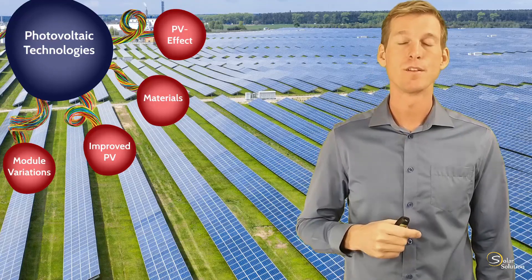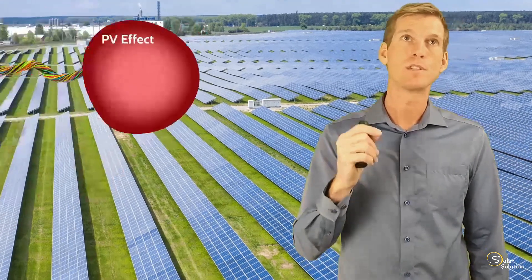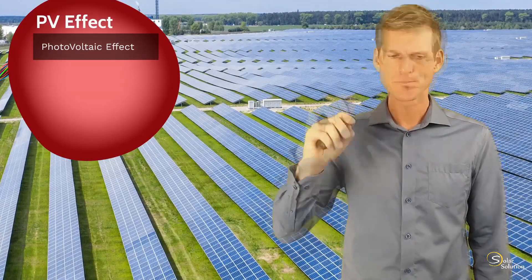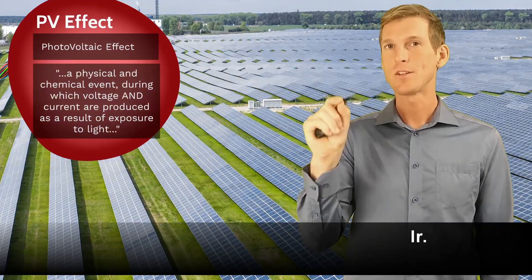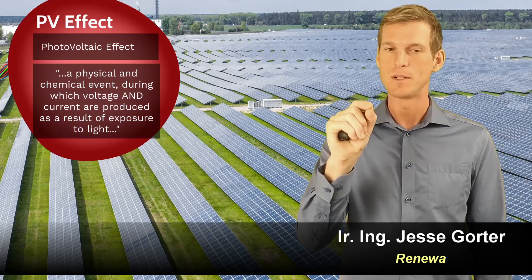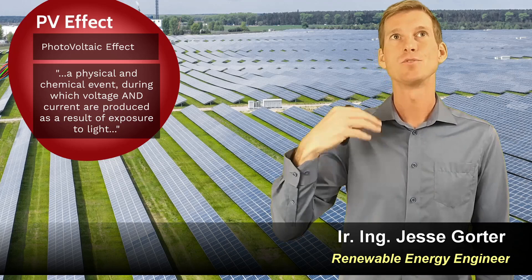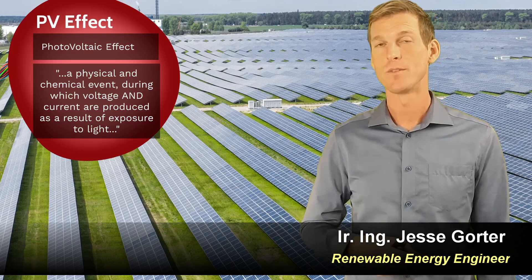Let's start with the first one, the PV effect. The photovoltaic effect is both a physical and chemical phenomenon whereby both voltage and current are produced. This is important to remember: you're producing both voltage and current as a result of sunlight hitting your solar panel.